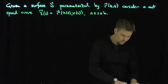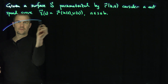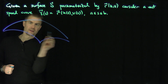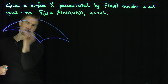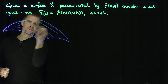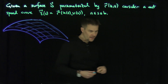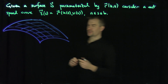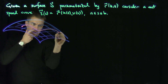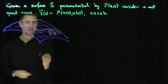Now, what sort of situation do we have here? We have some surface with some rulings — there's my surface. And then on this surface there is a curve — that's my curve, gamma of S.